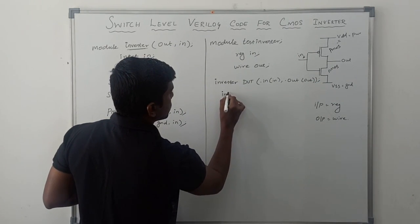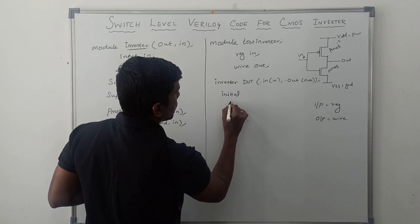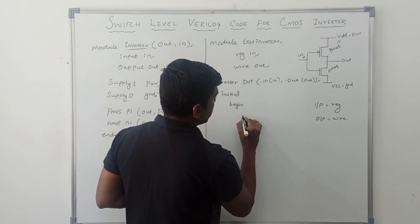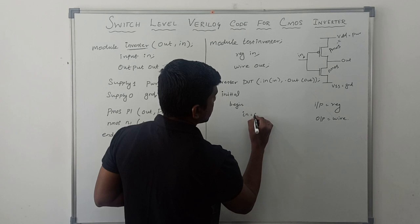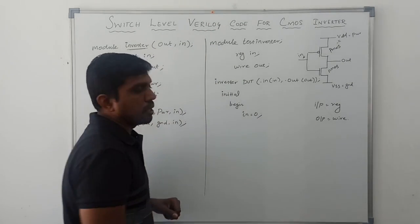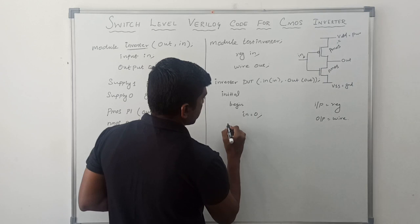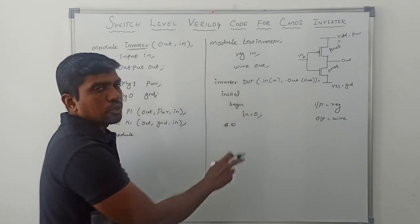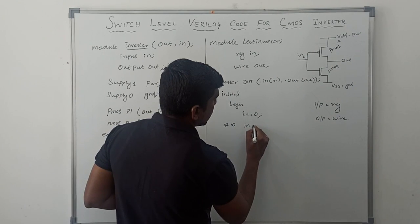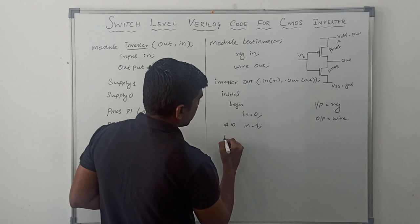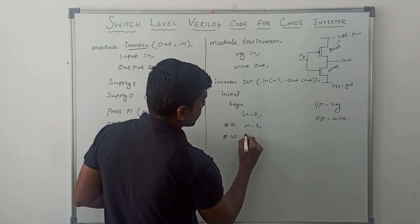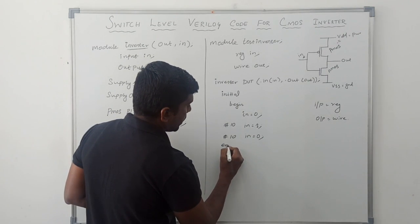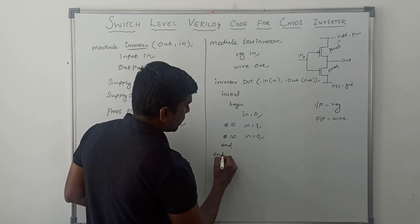Then initial begin. Initially this input value is set to be 0, in equal to 0. Then after 10 nanoseconds, this value changes from 0 to 1, in equal to 1. Then after 10 nanoseconds, in value goes to 0, so 1 to 0. Then end, end module.